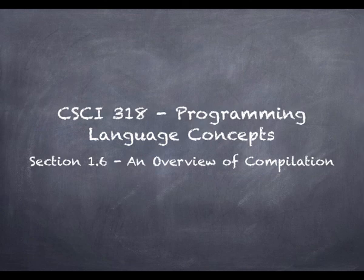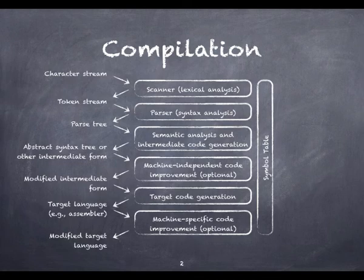Section 1.6, An Overview of Compilation. In a typical compiler, compilation proceeds through a series of well-defined phases. Each phase discovers information for use in later phases, or transforms the program into a form that is more useful to the subsequent phase.